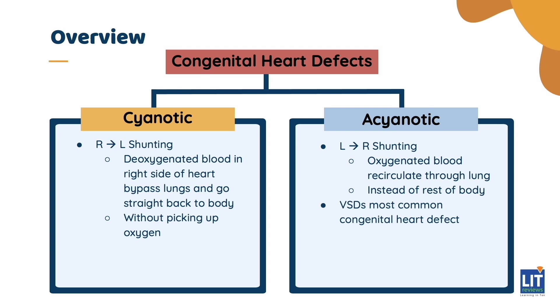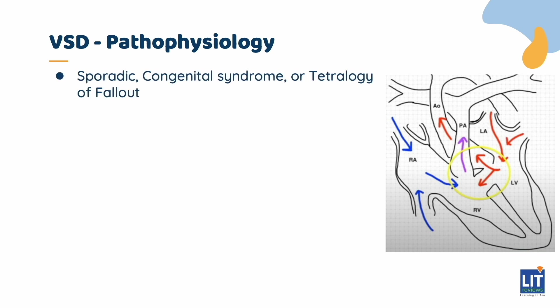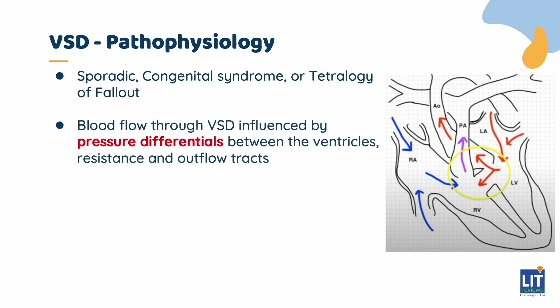VSDs fall under the acyanotic category and are the most common congenital heart defect. VSDs can be sporadic, part of a congenital syndrome, or a component of more complex defects such as the tetralogy of Fallot. They usually occur in the membranous portion of the septum. The direction of blood flow through the VSD depends on the differential pressures between the ventricles and the resistance in the outflow tracts from each ventricle, especially when the VSD is large enough for pressures in both ventricles to equalize.